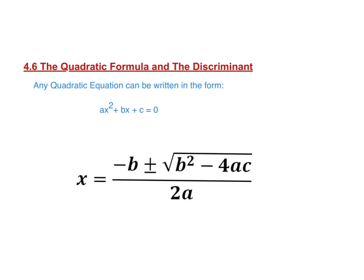So notice here, as we've mentioned before, there's typically two solutions for a quadratic. That's why you see the plus or minus here. One of them will be plus to figure it out, one of them will be minus.